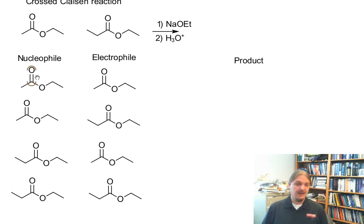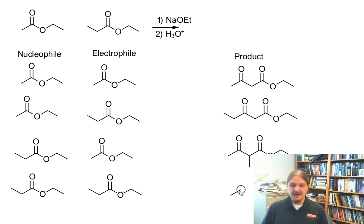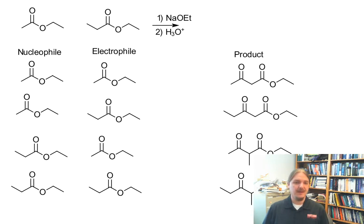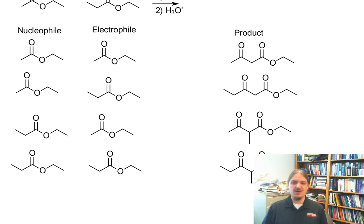So I could have ethyl acetate and ethyl acetate and I would get this product. If I had ethyl acetate as the nucleophile and ethyl propanoate as the electrophile, I would get this product. If I had ethyl propanoate as the nucleophile and ethyl acetate as the electrophile, I would get this product. And then finally, if I had ethyl propanoate as both nucleophile and electrophile, I would get this fourth product. And in a very likely situation, you don't want all four of these. You just want one of them.